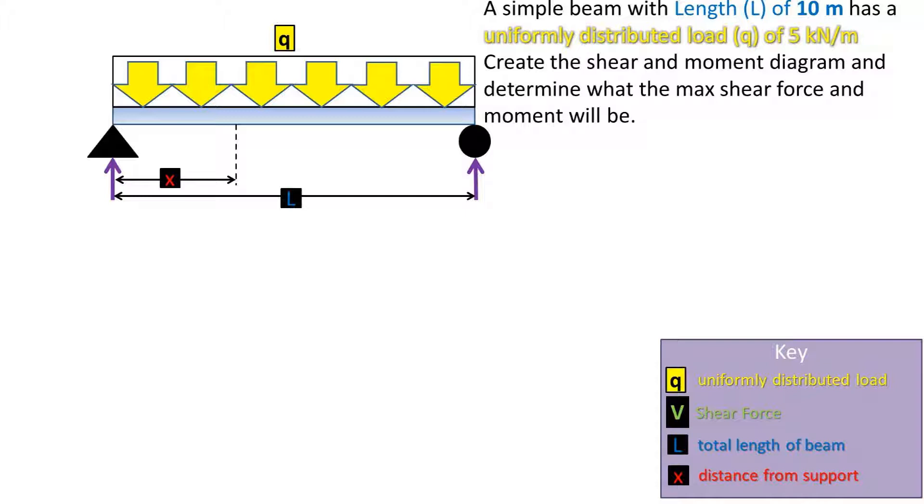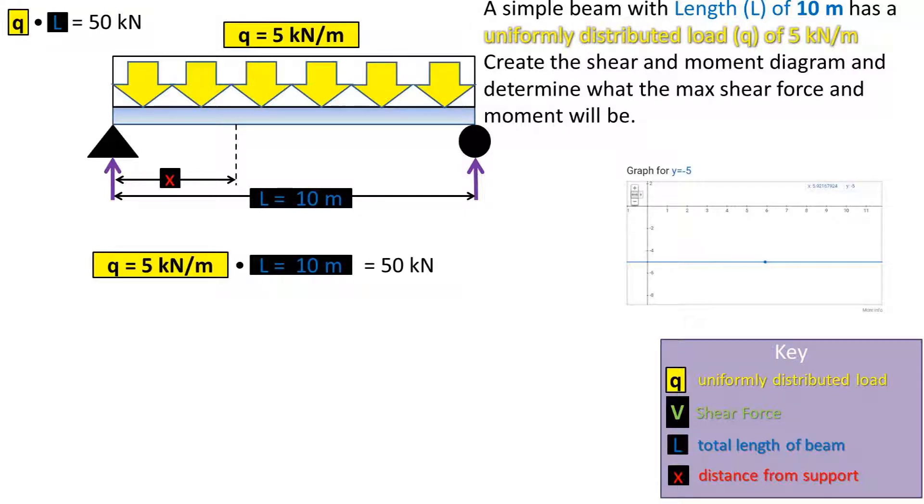So let's start off by finding the total force on the beam. Recall that we can get the total force on the beam by taking the Q, which is 5 kilonewtons per meter of beam, times the total length of the beam L, which is 10 meters. This gives us a total load acting down of 50 kilonewtons.